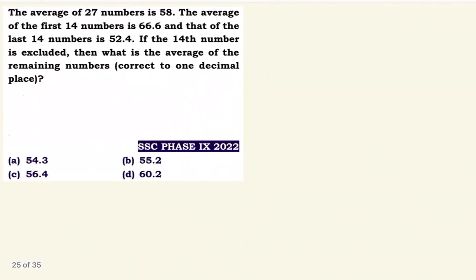Next: the average of 27 numbers is 58. The average of the first 14 numbers is 66.6 and that of the last 14 numbers is 52.4. If the 14th number is excluded, then what is the average of the remaining numbers?